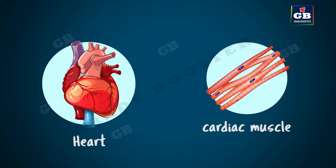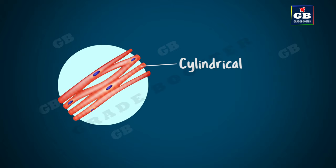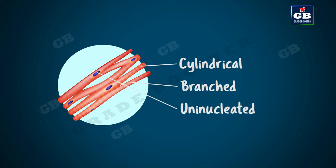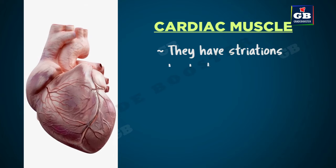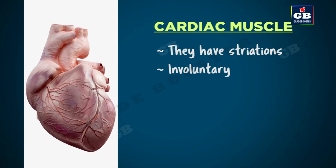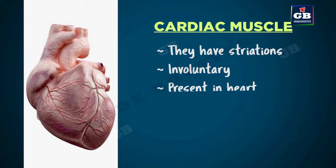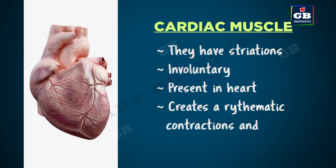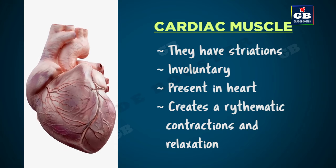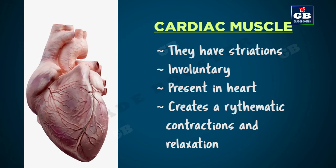Now we will see cardiac muscle, also known as heart muscle. The heart muscle cells are cylindrical, branched, and uninucleated — meaning only one nucleus. They have striations but are involuntary in nature. They are present in the heart. Cardiac muscle creates a rhythmic contraction and relaxation of the heart.